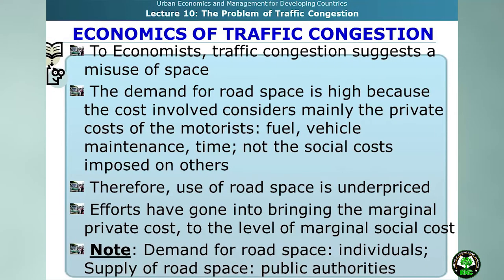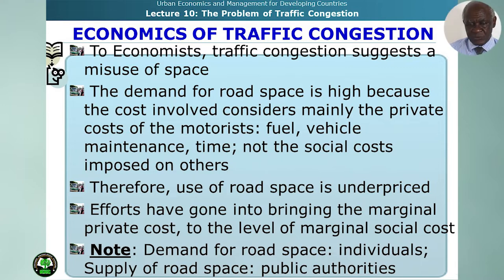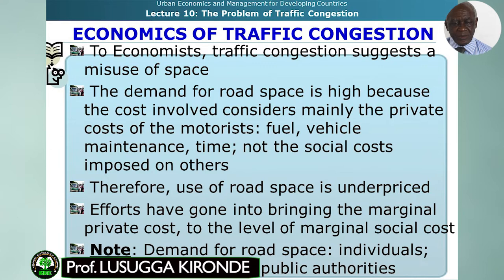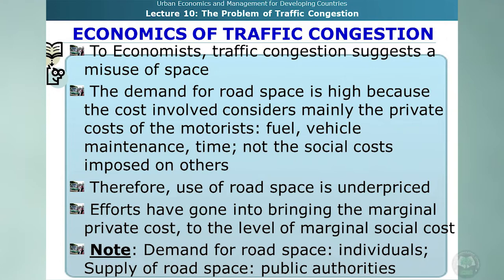Economists see traffic congestion as a misuse of space. The demand for road space is high because the cost considered by motorists covers mainly private costs — fuel, vehicle maintenance, and time — not the social costs imposed on others. Therefore, the use of road space is underpriced. Efforts have gone into bringing the marginal private cost to the level of marginal social cost. The demand for road space comes from individual motorists, but the supply comes from public authorities.